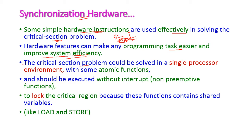The critical section problem can be solved in a single processor environment with atomic functions. Atomic functions should be executed without interrupt — they are non-preemptive functions — for the purpose of locking the critical region. Hence, atomic functions are used to lock the critical regions and should execute without any interrupt because these functions contain shared variables.